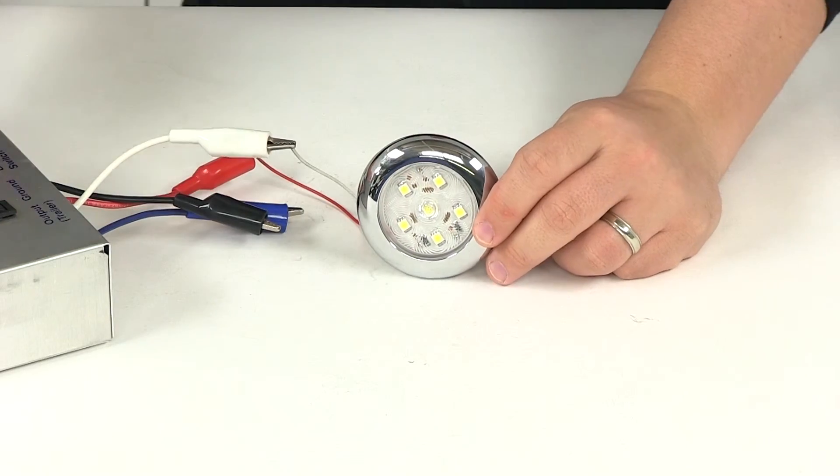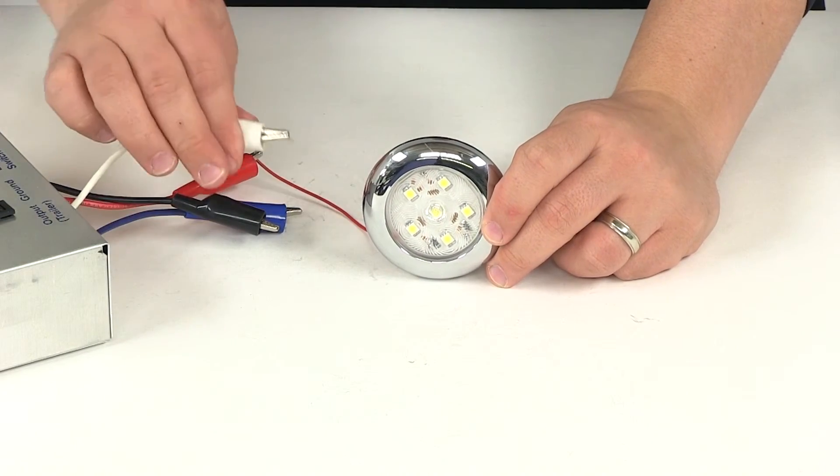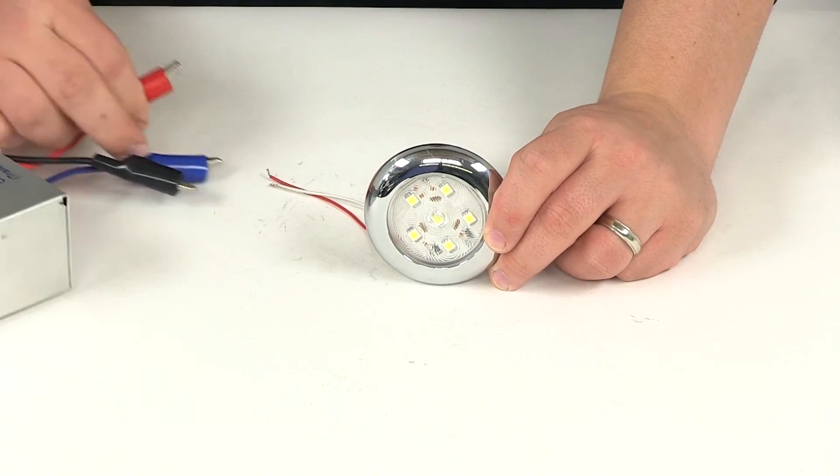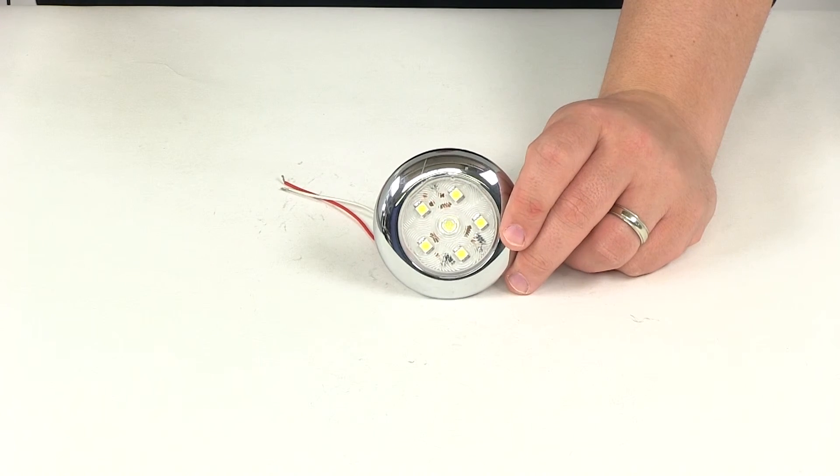That's going to do it for our review of part number UCL60CB. This is the Optronics three-inch clear LED utility light.